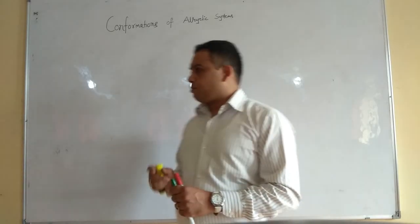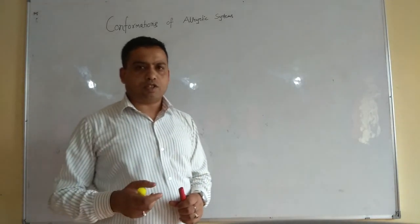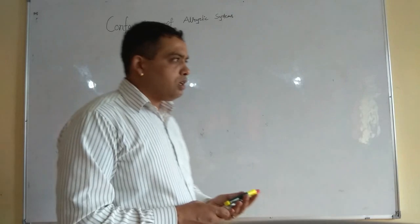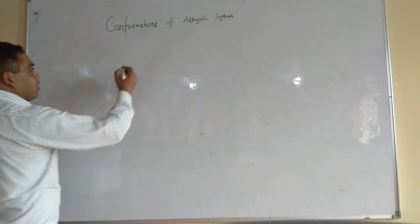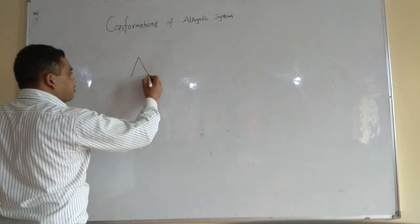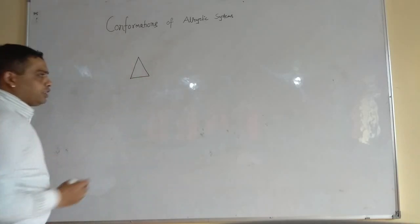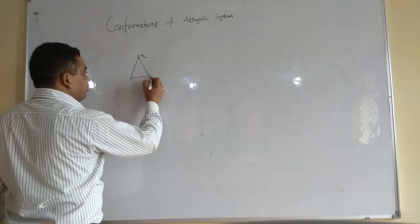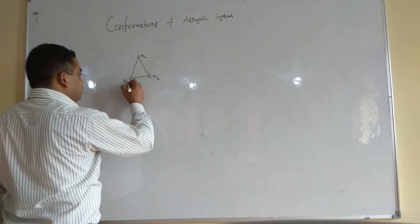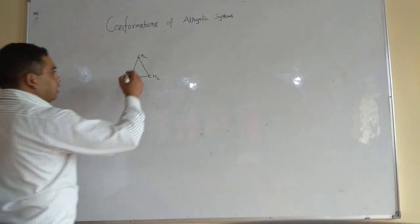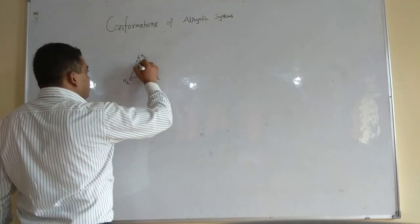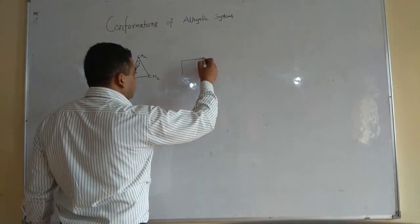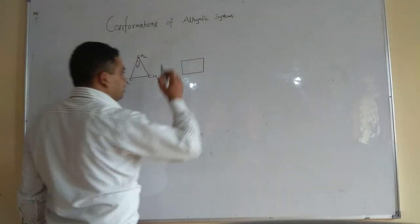Not going into the details of Baeyer strain theory, I will quickly move to the concept of different conformations of cyclic systems. Initially, consider cyclopropane — you write it as CH₂–CH₂–CH₂ — and the bond angle between these carbons would be 60 degrees.